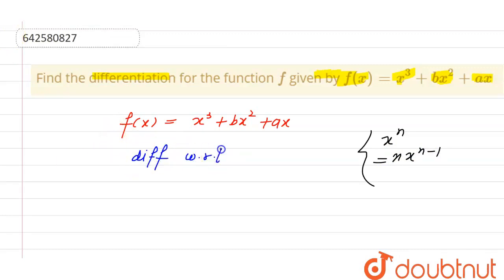So, differentiation with respect to x. Differentiation with respect to x, we will get f'(x) equal to 3 will shift to coefficient and the power decreases by 1. So, we will get 2.